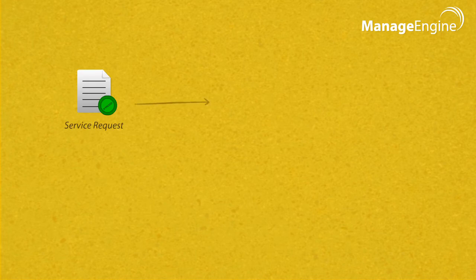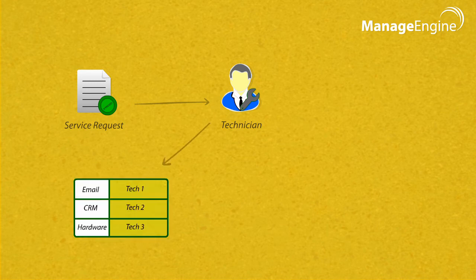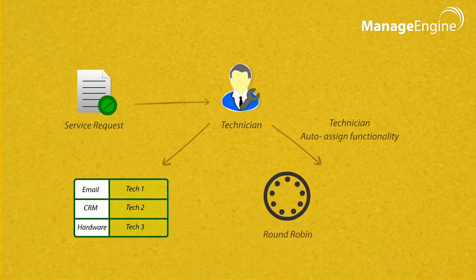The service request will now be assigned to a technician after the approval process is completed. You can either assign specific technicians for each service or use a technician auto-assign functionality, which uses a round-robin or load balancing method to allocate the request.